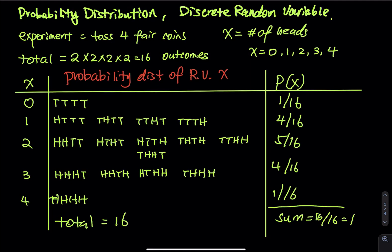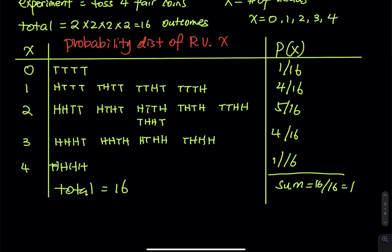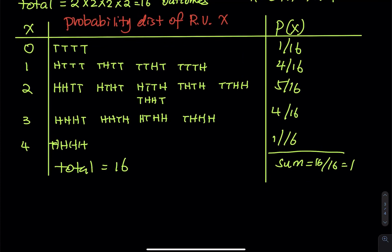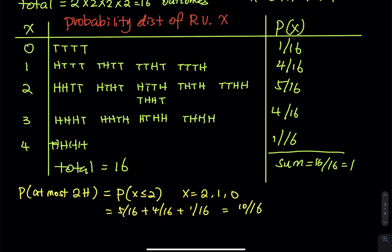And then let's ask two probability questions. Just make this more fun. So the first question is, what is the probability of getting at most two heads? You toss four fair coins. What is the probability that you get at most two heads? Probability of at most two. At most two means the maximum is two. So that would be X less than or equal to two, including two. So X can be two, one, and then zero. So the probability of two is five over 16. The probability of one is four over 16. The probability of zero is one over 16. See how convenient it is. The total is 10 over 16.